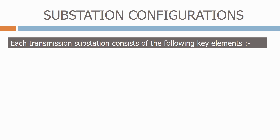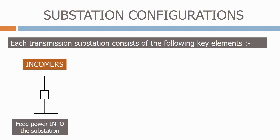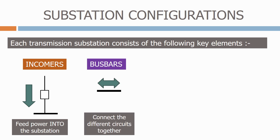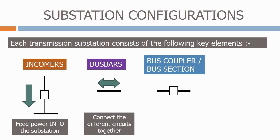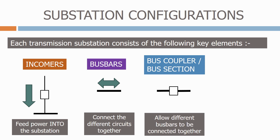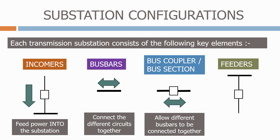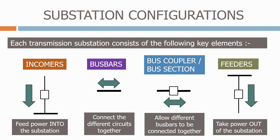Each transmission substation consists of the following key elements: incomers, which feed power into the substation. They can either be plain feeders or transformer feeders.